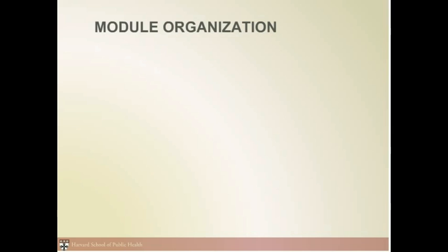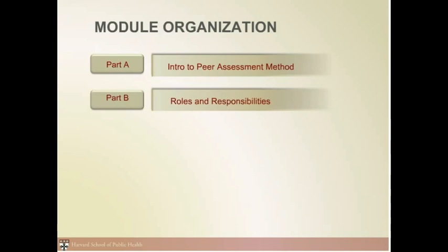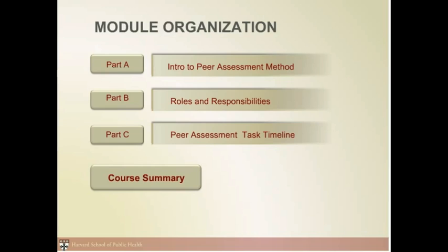This module is organized into three parts. Part A provides a short review of critical incident and root cause analysis, and provides an introduction to peer assessment analysis. Part B describes the different roles and responsibilities in peer assessment. And in Part C, we'll go into more detail about the tasks and timeline of the peer assessment process, using a case study involving a West Nile virus outbreak in Texas. At the end of the course, we'll have a short summary.